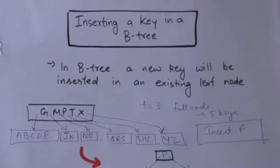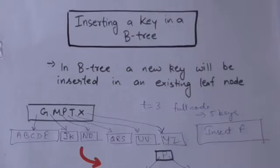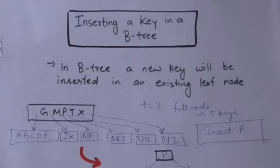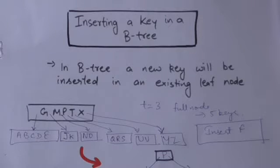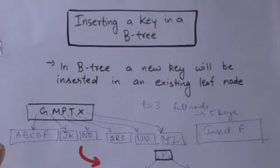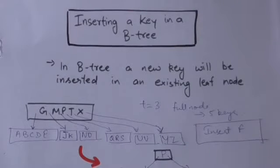Welcome back. In this tutorial we will learn how we can insert a key in a B-tree. To insert a key, we will insert it in an existing leaf node. We start from the root and move down the B-tree searching for the position for the new key to be inserted. Whenever we encounter any full node along the way, including the leaf node, we will split it. It will be more clear after this example.